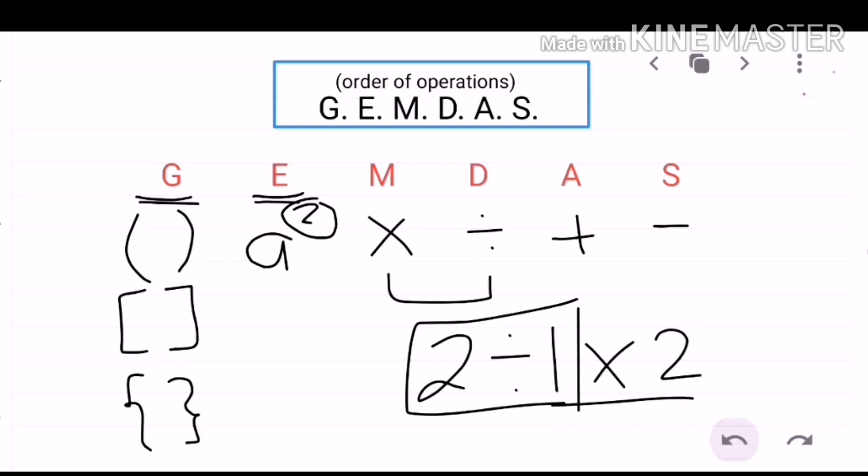Same rule applies for ADDITION and SUBTRACTION. Whatever comes first between ADDITION and SUBTRACTION from the left of the equation should be done first.